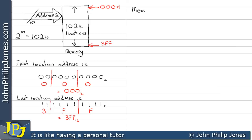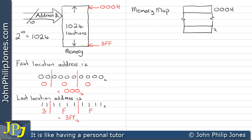When talking about memory, it is usual to refer to a memory map. Quite simply, it is a diagram where we show the first and last location, put a couple of squiggles in between to indicate more locations exist, and label the first and last location with the appropriate address. This represents 1K of memory, which is 1024 locations.